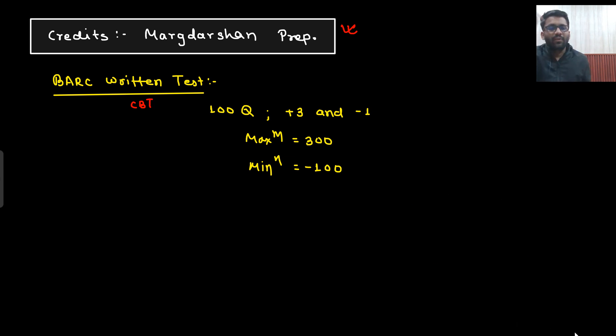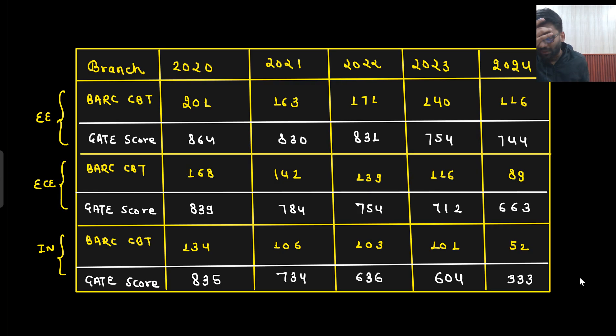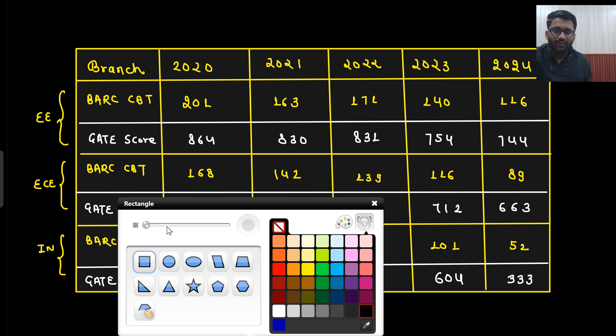Now this is the cutoff. Without taking much time, let's discuss this. Here what you can see: EC, Electrical, and Instrumentation, these are the cutoffs. This is the BARC CBT cutoff year-wise and this is the GATE score. Directly we can see what we can see.